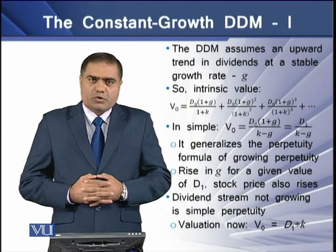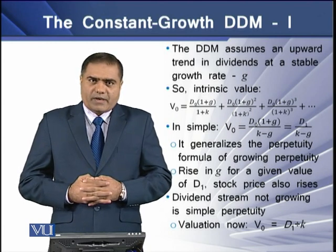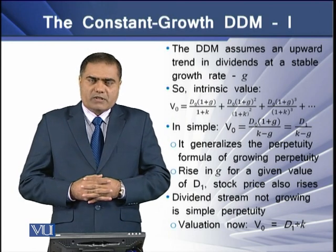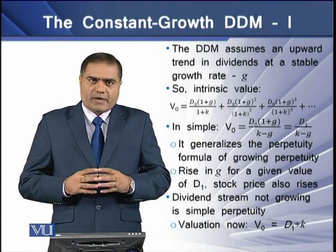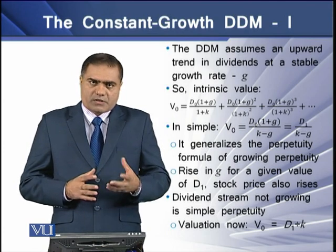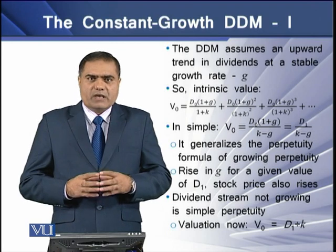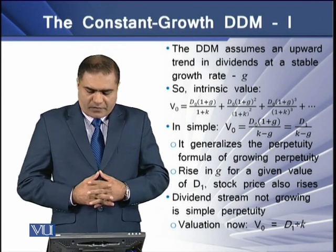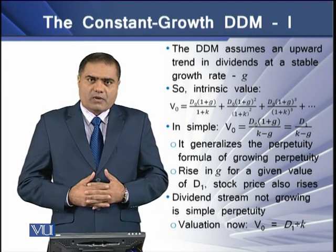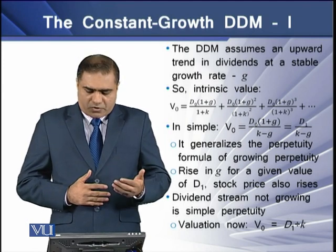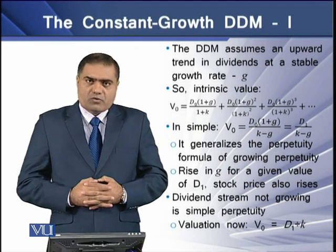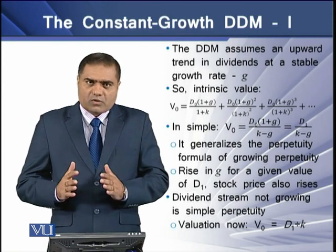In simple terms, V0 is equal to D1 divided by K minus G. Here D1 is basically D0 multiplied by one plus the growth rate, K is the required rate of return or the capitalization rate, and G is the dividend growth rate. This equation generalizes that for a given value of G, for a given value of D1, the stock price also rises.